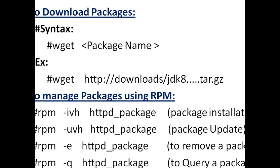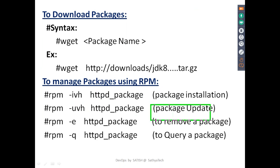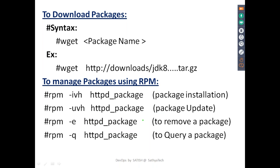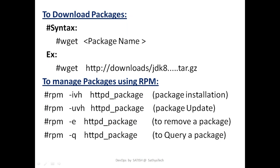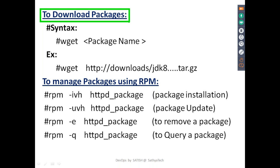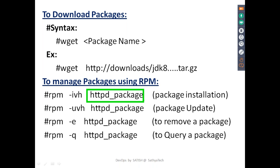If you want to update a package use `rpm -uvh`. To remove a package use `rpm -e` followed by the package name, like java or httpd. To check whether a package is installed or not use `rpm -q` followed by the package name. The limitation of RPM is that we have to download packages manually, and also all dependencies separately.